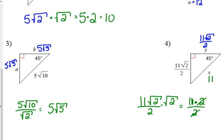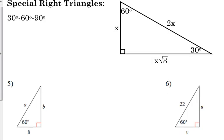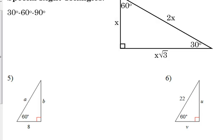Not terribly difficult — you just have to remember the relationships between the legs and the hypotenuse. We also have what we call 30-60-90 triangles. Similar concepts, but with an extra detail to remember because it's not an isosceles triangle anymore. The leg opposite 30 degrees is x, the hypotenuse is 2 times that value, and the leg opposite 60 degrees is x times the square root of 3.